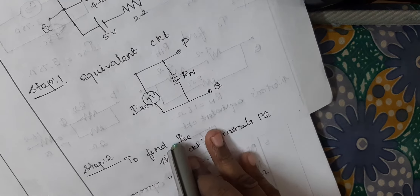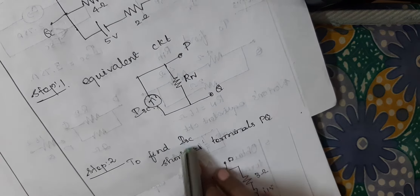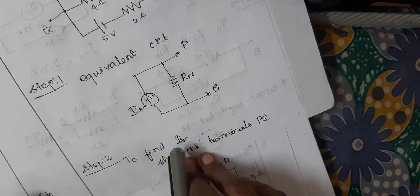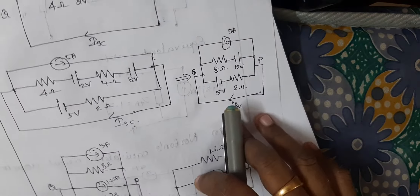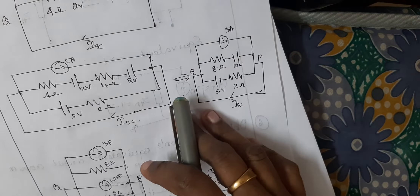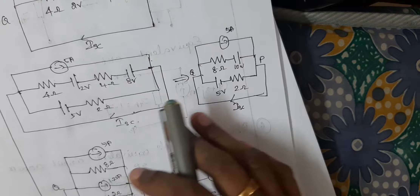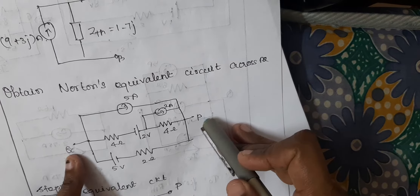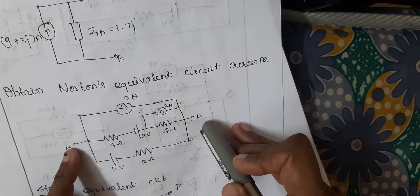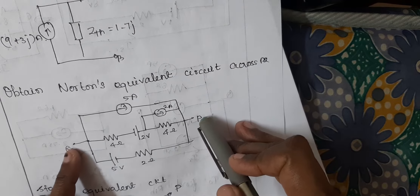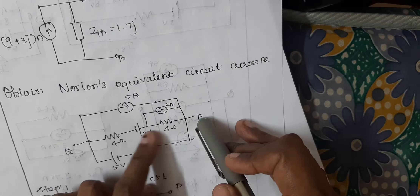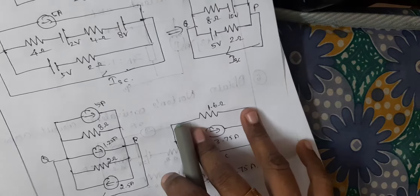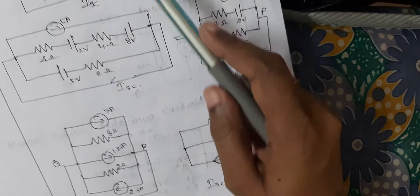So the first step: you want to find the short circuit current. In order to find the short circuit current, you want to short circuit the load resistor. But here, they have asked to find PQ — you want to find Norton's equivalent circuit across PQ. Here there are two resistors, so you can use the source transformation method and it is easy for you.